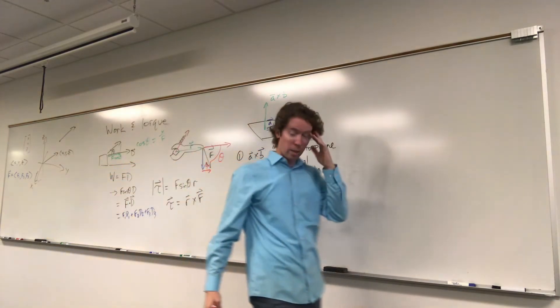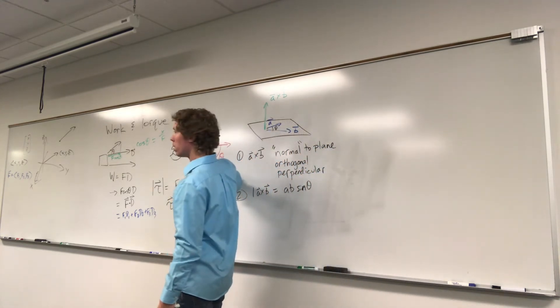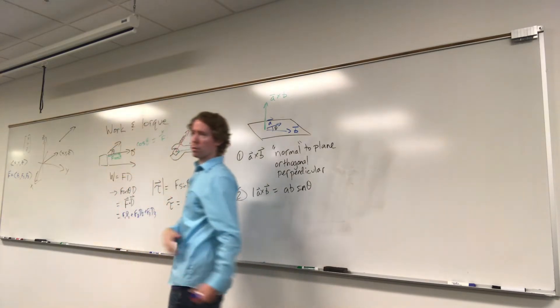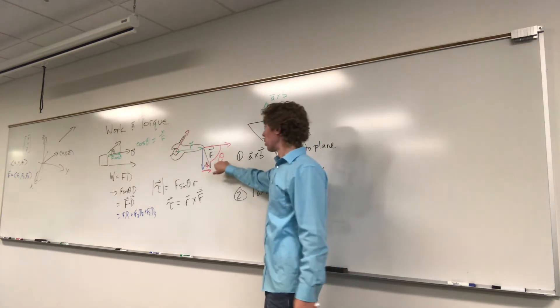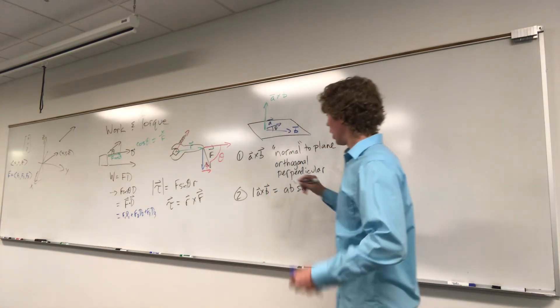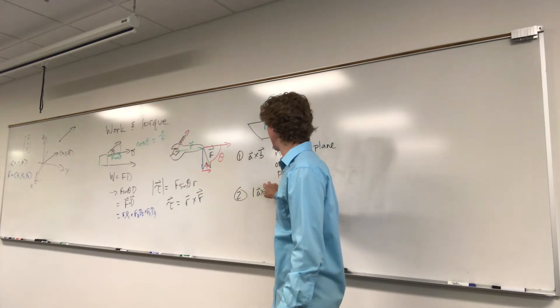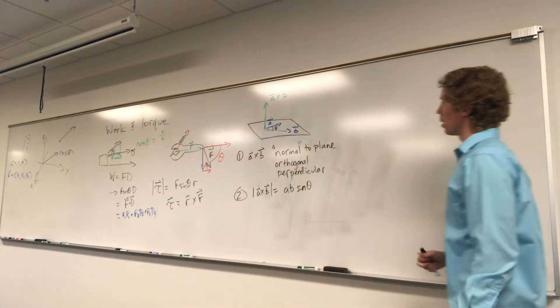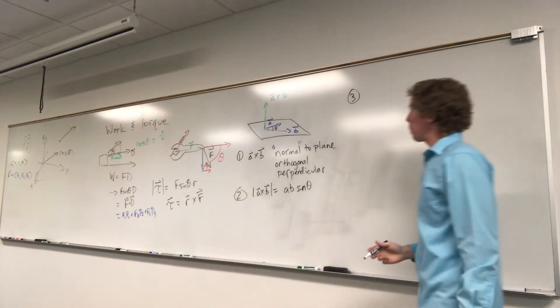So one thing that I glossed over when we were over here is that this theta that I'm talking about is the angle between R and F. I just wanted to mention that because I didn't want you to get confused with sine being used to compute this and cosine being used to compute this when they look really similar in the picture. It's because of the way we're choosing this angle. I meant to put another bar right here. That's supposed to say the length of A cross B.